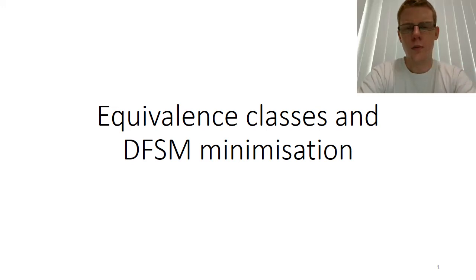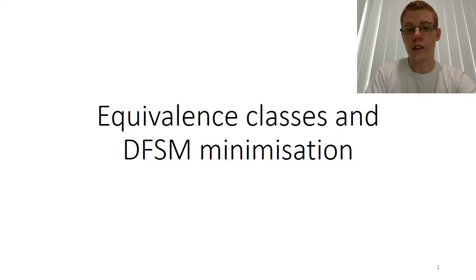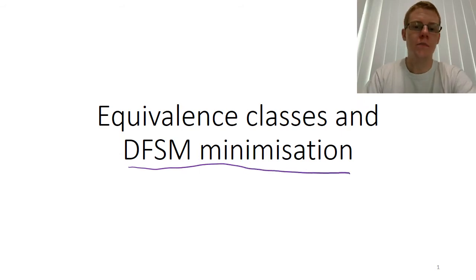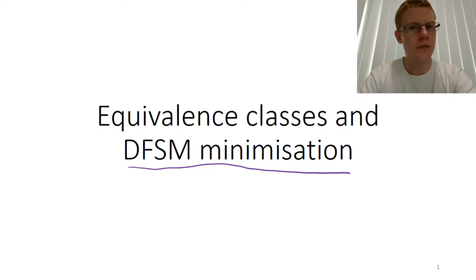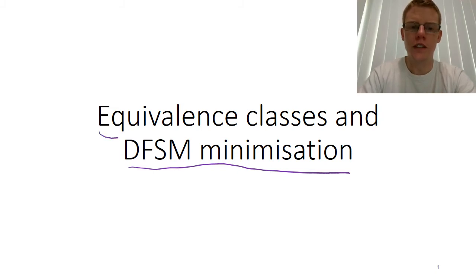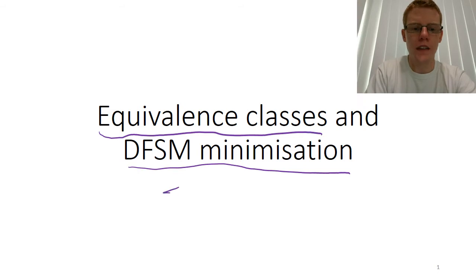In this video we're going to talk about minimising the states of finite state machines. But we're not going to talk about the algorithm in DFSM. Instead we're going to talk about how we can find an idea about what the minimum number of states we really need is, using the concept of equivalence classes of strings from the alphabet for that machine.